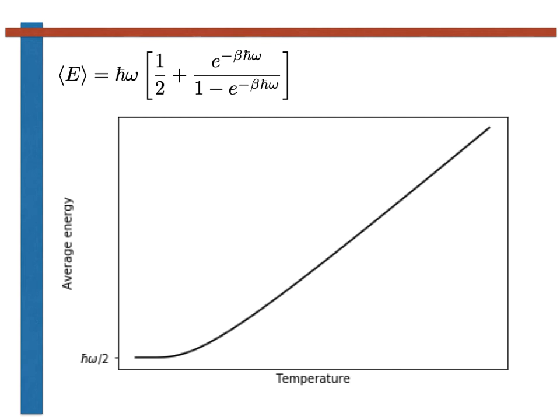Now that we have drawn the graph and know what to expect, we can go about trying to manipulate the expression for the average energy in order to understand the limiting behaviour of this system at high and low temperature. Let's start by considering what happens when the temperature is small. To consider these low temperatures, we will take the limit as beta, the inverse temperature, tends to infinity. In this limit, the e to the minus beta h bar omega terms in this second quotient go to zero.